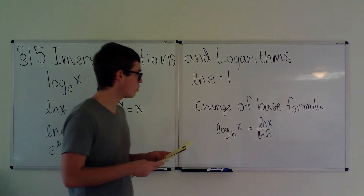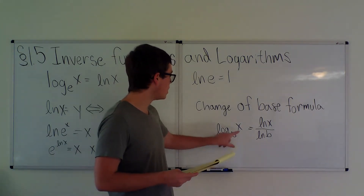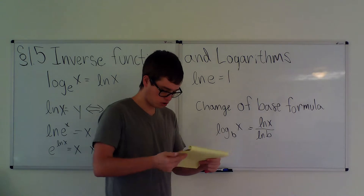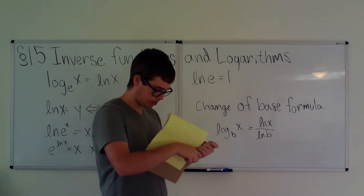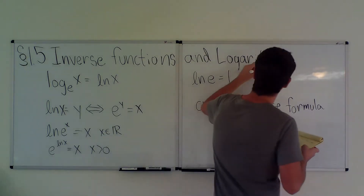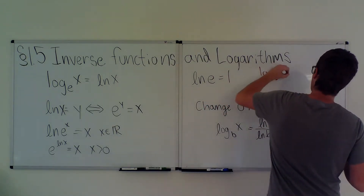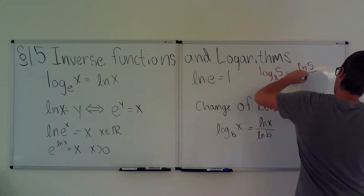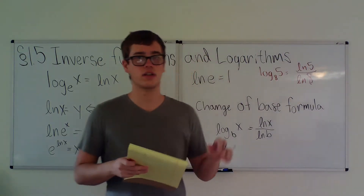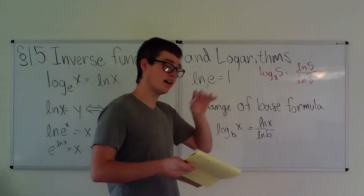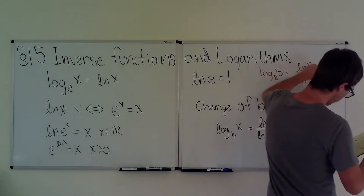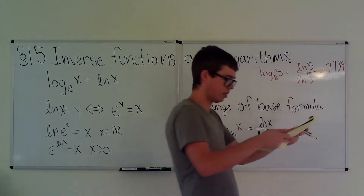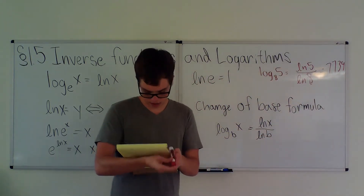Now onto the change of base formula: log_b(x) = ln(x)/ln(b). This is helpful for solving complicated logarithms. For example, log_8(5) = ln(5)/ln(8), which is easy to enter into a calculator — ln 5 divided by ln 8 — and that equals approximately 0.7739.